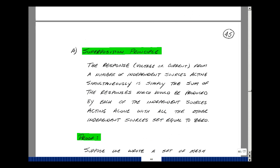Let me just state the superposition principle, and then I'll try to explain what it means, and then we'll go through a proof. The response, this would be a voltage or current from a number of independent sources acting simultaneously, is simply the sum of the responses which would be produced by each of the independent sources acting alone, with all the other independent sources set equal to zero. That's quite a mouthful.